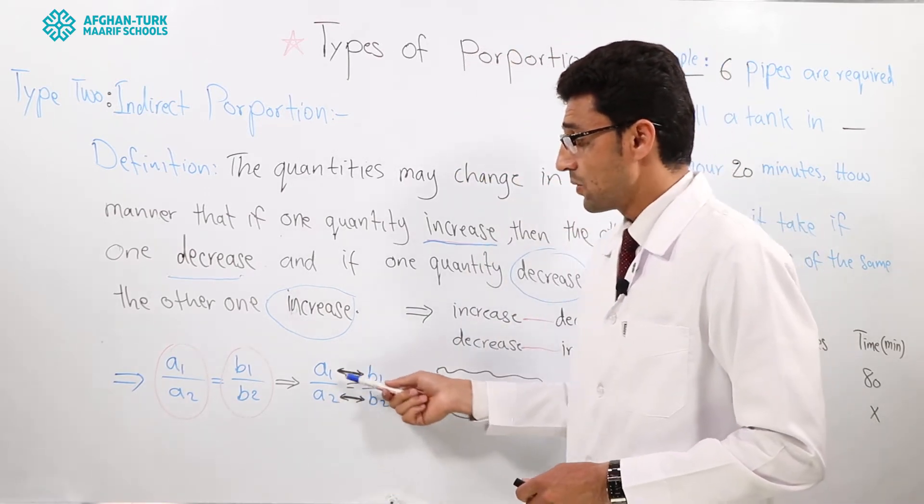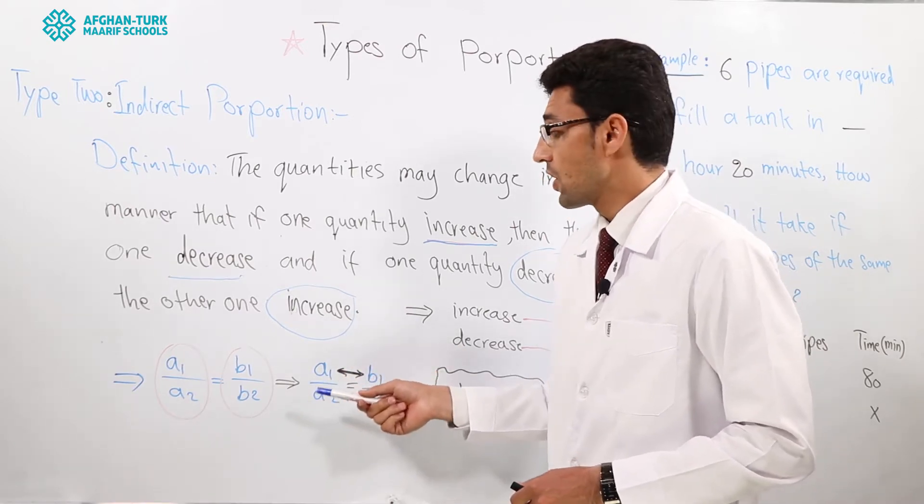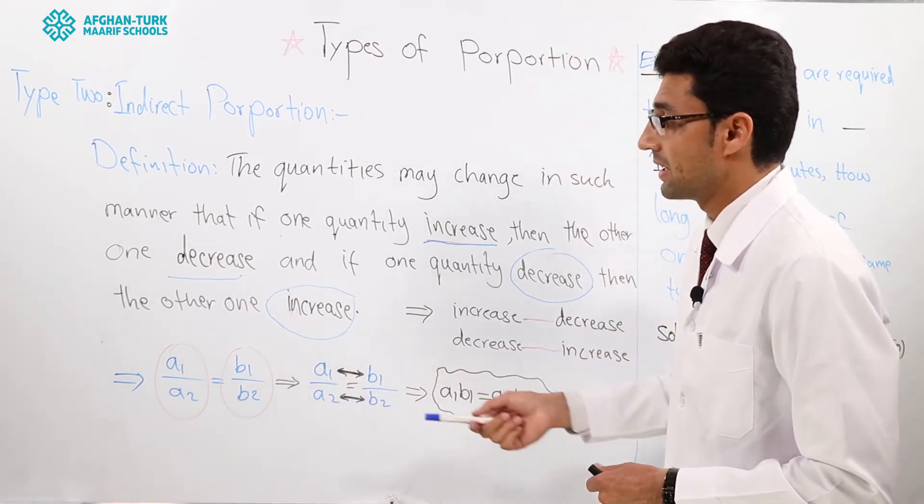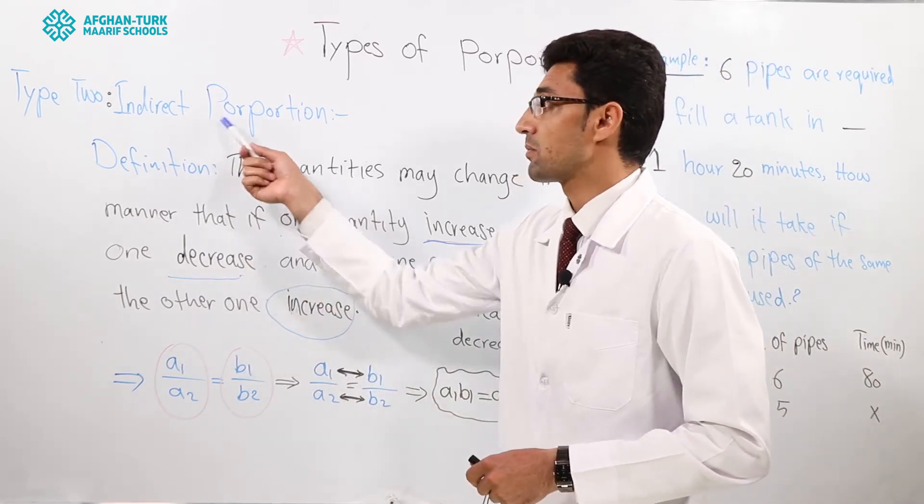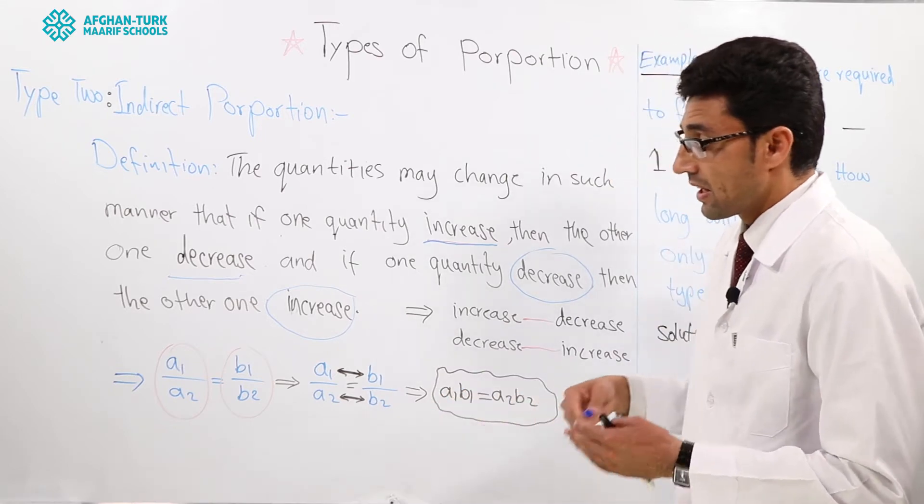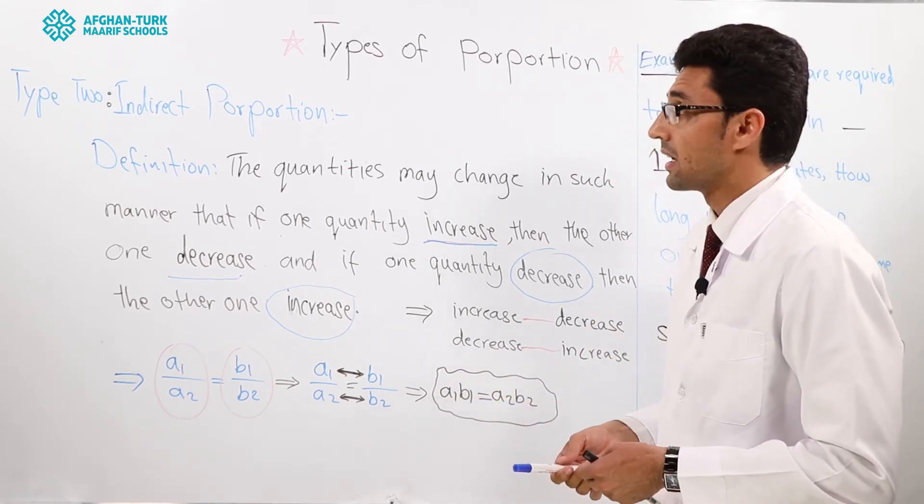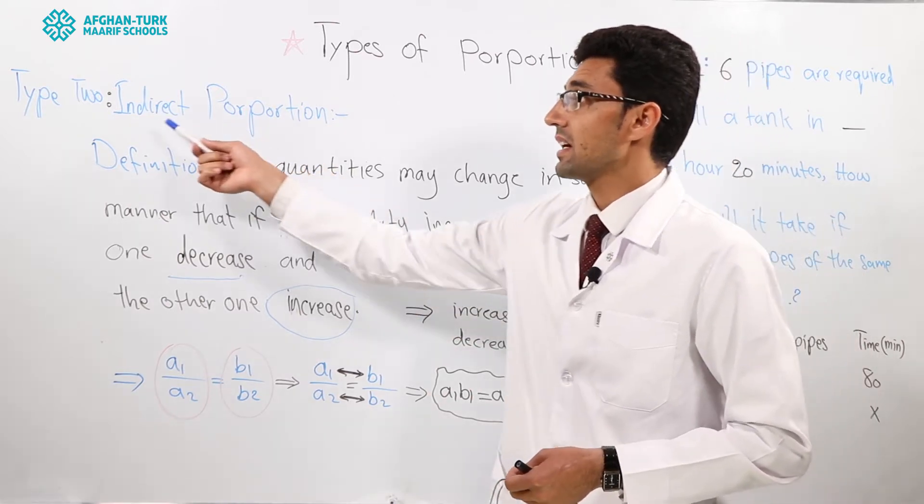How do they change whenever we have the indirect proportion? This is a proportion. How do we solve the proportion which is indirect?